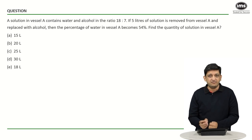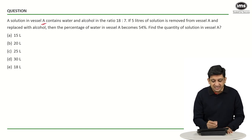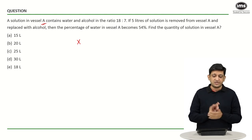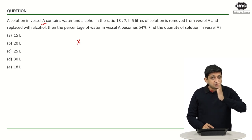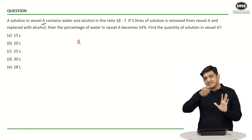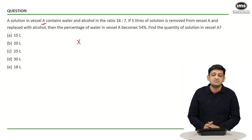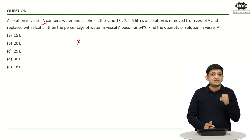What I am going to show you is a shorter way of solving this. Let us say vessel A contains x liters of solution. Just think about it — if vessel A contains x liters of solution with water and alcohol in the ratio 18:7, and I remove 5 liters from the solution, what will be the proportion of water and alcohol in the resultant solution? It is going to be 18:7.